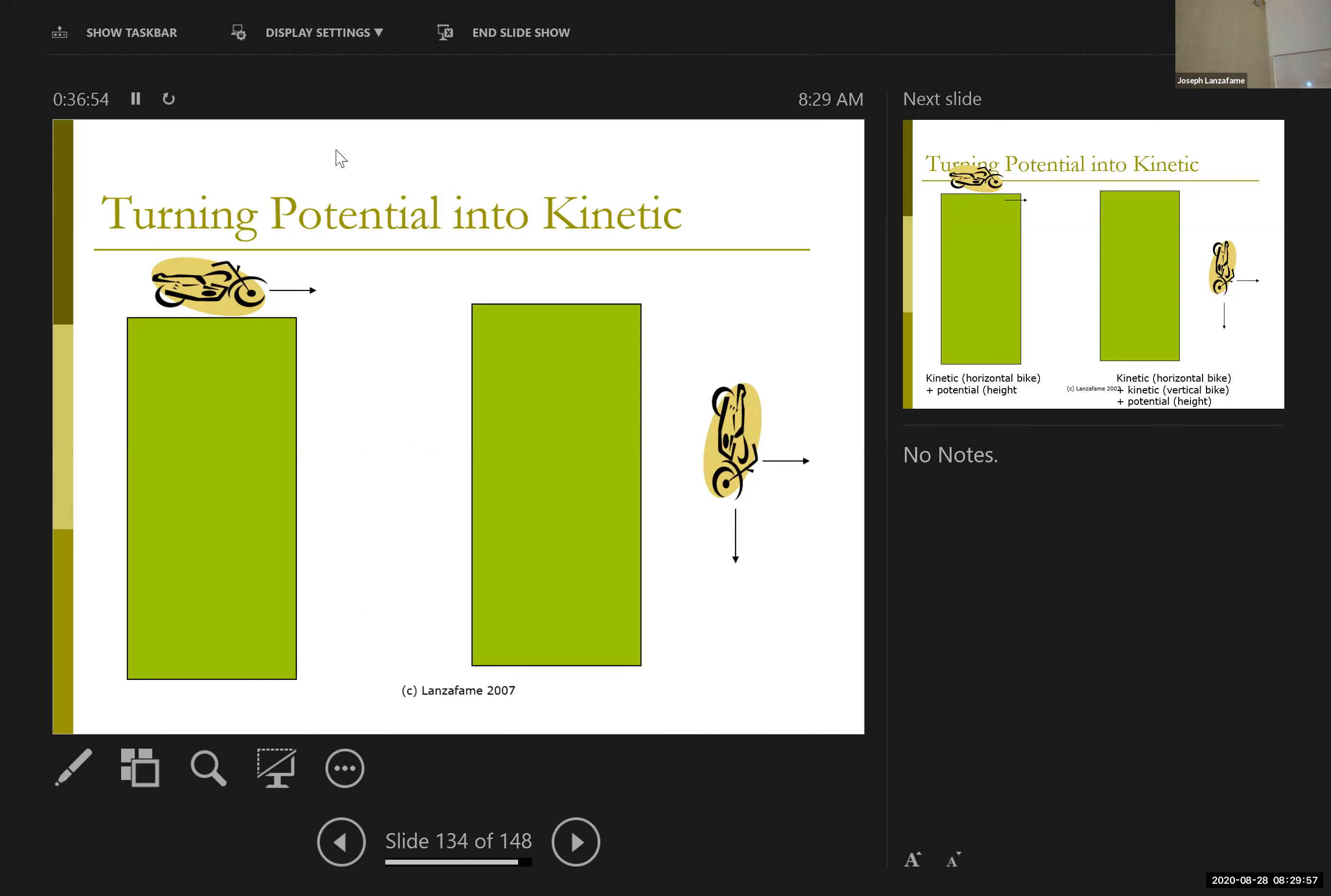My motorcycle at the top of the building, don't ask me how I got it up there. It's not moving. It's not doing anything. It's just sitting there. But by virtue of its altitude in the gravitational field, it has potential energy. If it goes over the edge, the potential energy decreases in exactly the same magnitude as the kinetic energy increases.